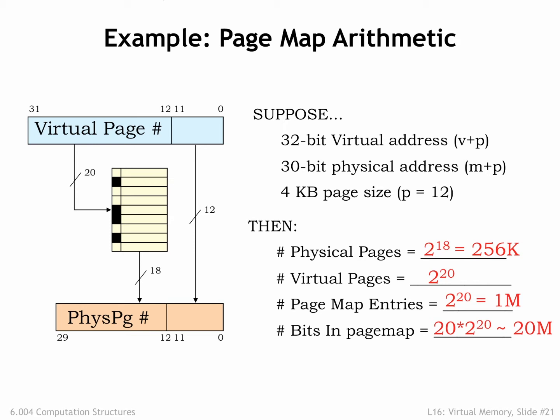Each page map entry contains a physical page number, an R bit, and a D bit, for a total of M plus 2 bits, which is 20 bits in our example. So there are approximately 20 million bits in the page map. If we were thinking of using a large special-purpose static RAM to hold the page map, this would get pretty expensive.